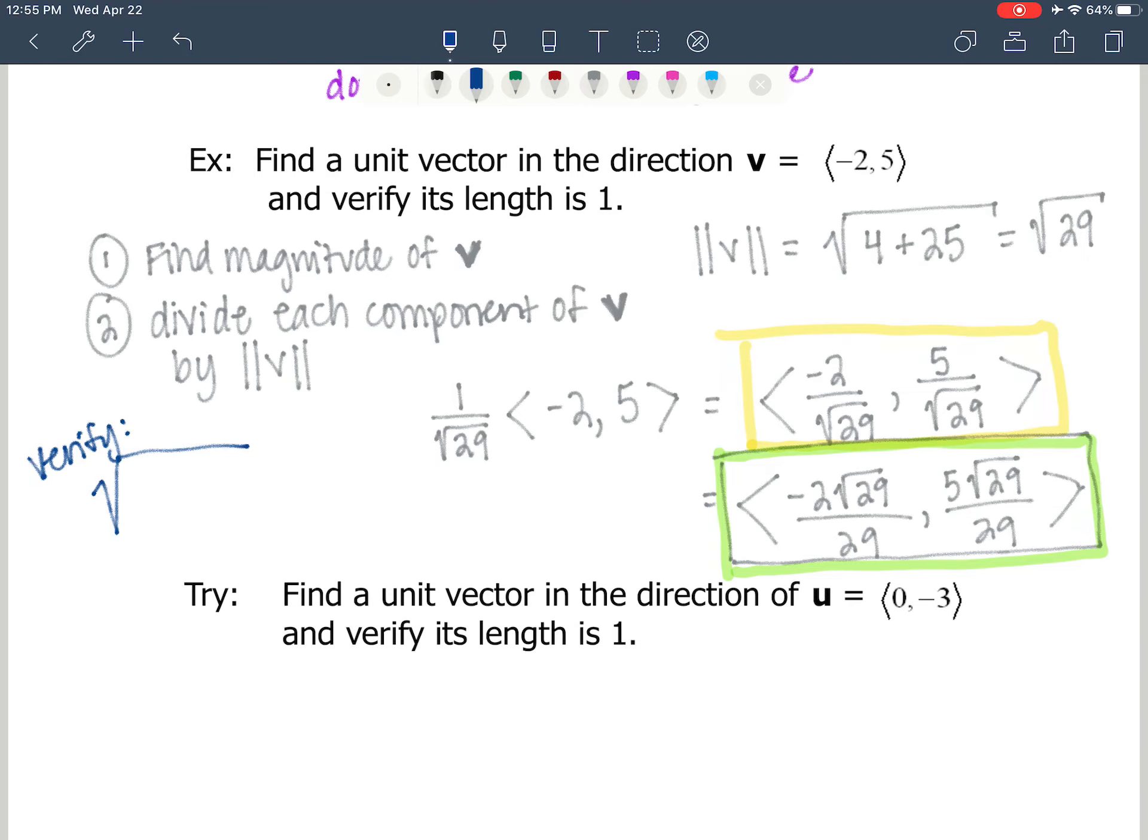So I'm going to find the magnitude by taking the square root of negative 2 over the square root of 29 squared plus 5 over the square root of 29 squared. And that's equal to 4 over 29 plus 25 over 29, which is 29 over 29, which is 1, and the square root of 1 is 1. So it's verified.